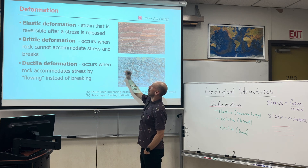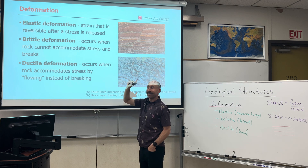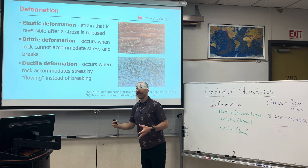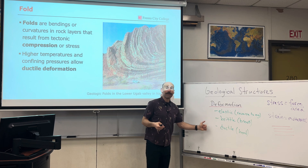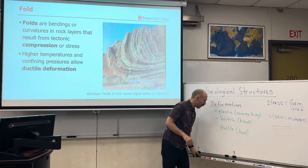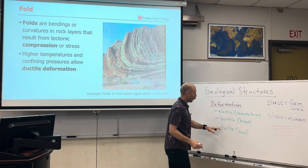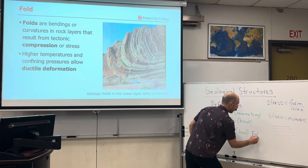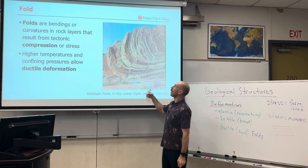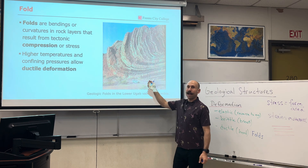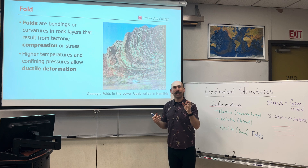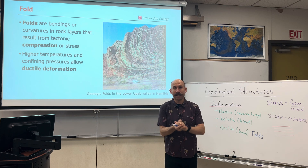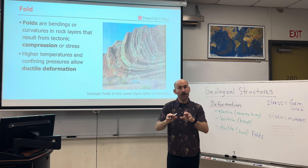Strain that is reversible after a stress is released is elastic. Brittle occurs when a rock cannot accommodate stress and breaks. Ductile occurs when a rock accommodates stress by flowing instead of breaking. With our types of deformation we get geologic structures: folds when the rocks bend, and in order for this to happen there needs to be compression.